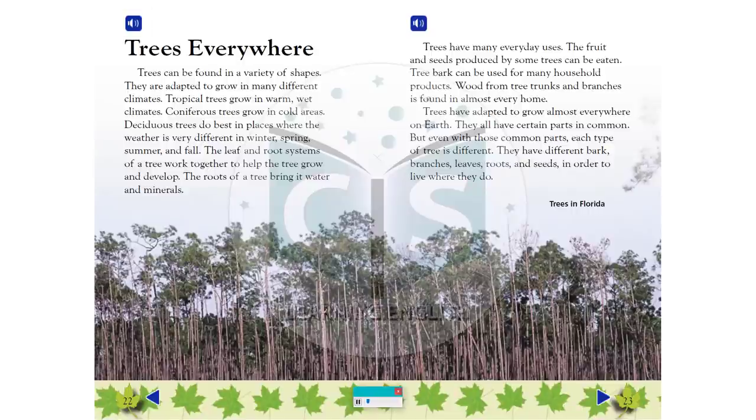Trees Everywhere: Trees can be found in a variety of shapes. They are adapted to grow in many different climates. Tropical trees grow in warm, wet climates. Coniferous trees grow in cold areas. Deciduous trees do best in places where the weather is very different in winter, spring, summer and fall.